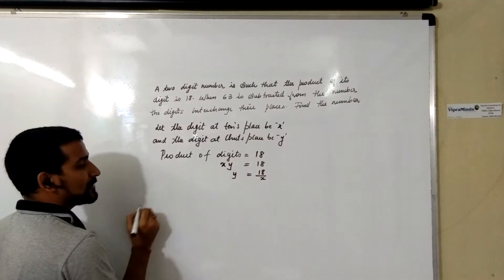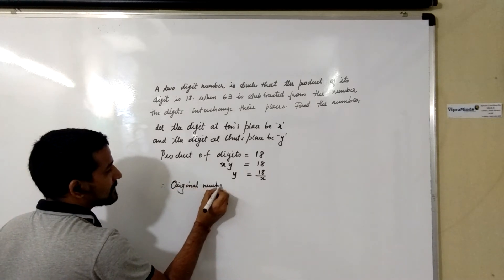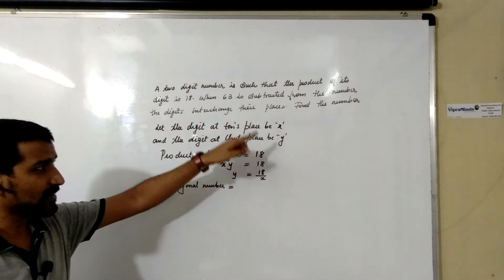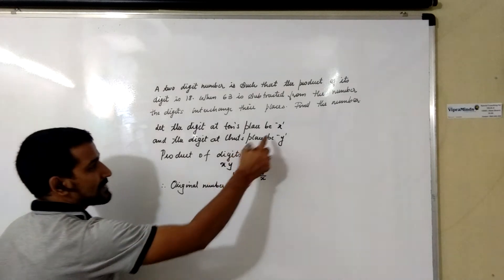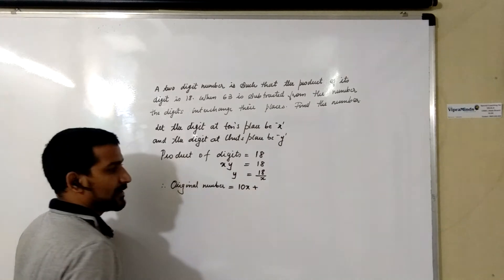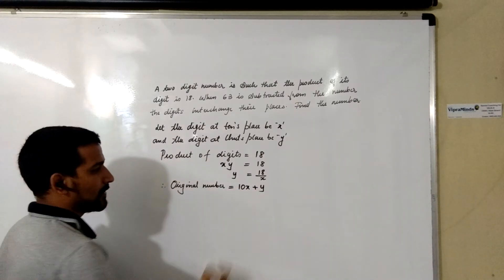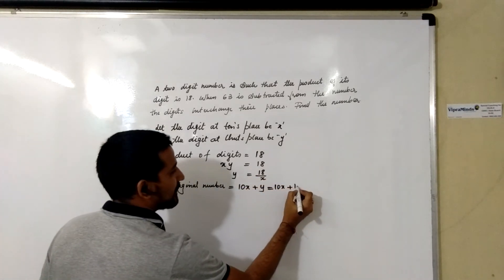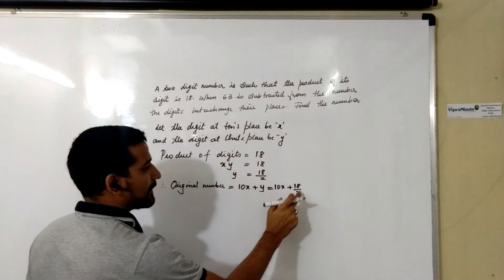As we know, for a two-digit number, the original number equals the tens place digit multiplied by 10 plus the units place digit. So the original number is 10X + Y. Substituting Y = 18/X, the original number becomes 10X + 18/X.